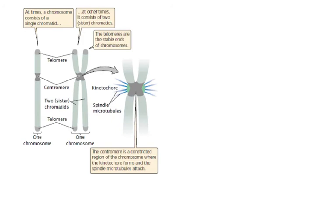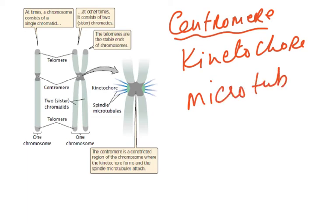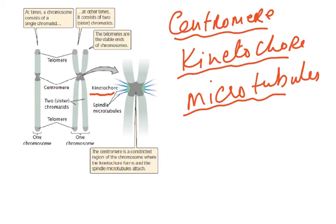The centromere is the central constricted area where the chromatids are attached. Just outside the centromere is a structure called the kinetochore — this is where the microtubules attach. The microtubules are part of the spindle that pulls the chromatids apart during mitosis. Each metaphase chromosome has two kinetochores. The centromere is needed for separation of the chromatids during mitosis.